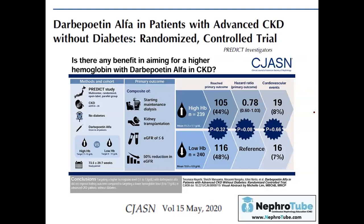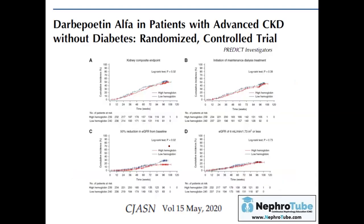A more recent trial published in CJASN compared a hemoglobin target of 11–13 versus 9–11. The primary composite outcome included starting maintenance hemodialysis, kidney transplantation, eGFR ≤6, or 50% eGFR reduction. There was no difference in any primary endpoint between the high and low hemoglobin groups — no difference in CKD progression or any other event. Therefore, lower hemoglobin levels are preferred.